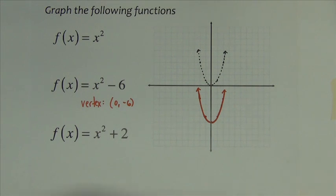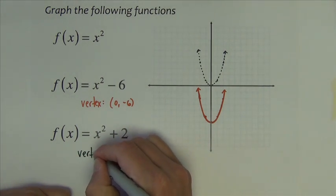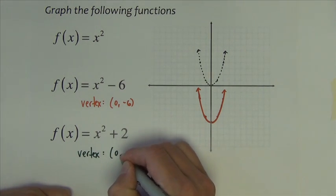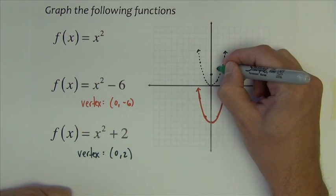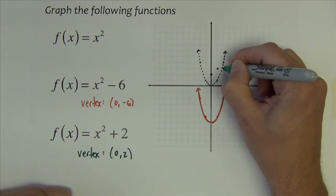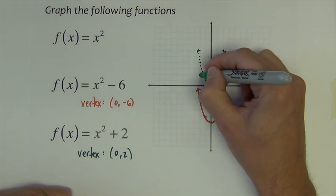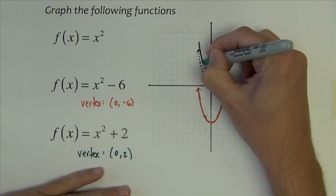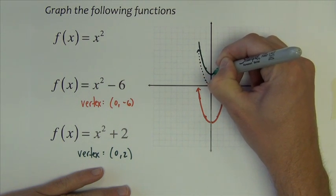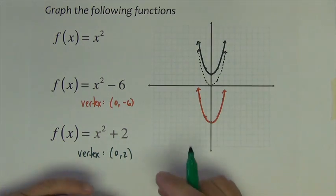The next one, x² + 2. The vertex moves to (0, 2), so it moves right here. From that point, 1 squares to 1, 2 squares to 4, on both sides.